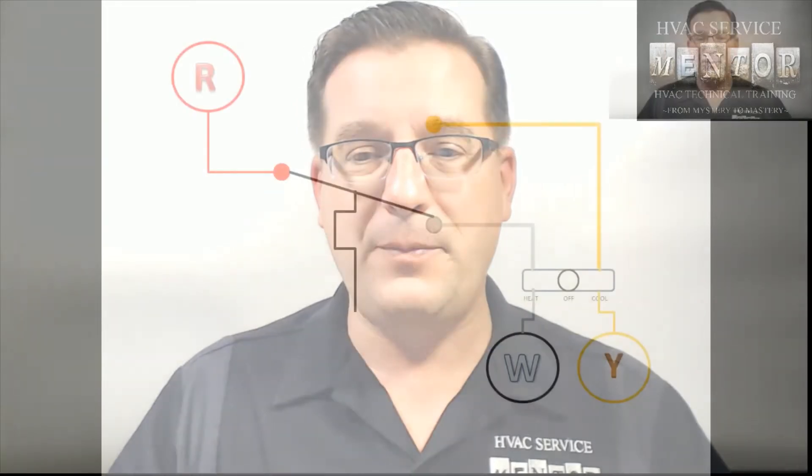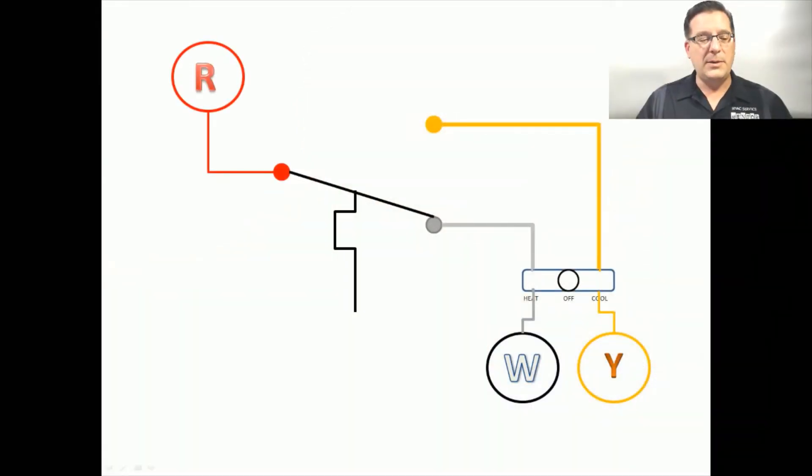A thermostat is a temperature activated switch. On this diagram here, let me get my mouse pointer going, you'll notice that we have a switch with three terminals: one labeled R, one labeled Y, and the other labeled W. In the middle is a switch that will switch between W and Y, connecting each one to R in turn.